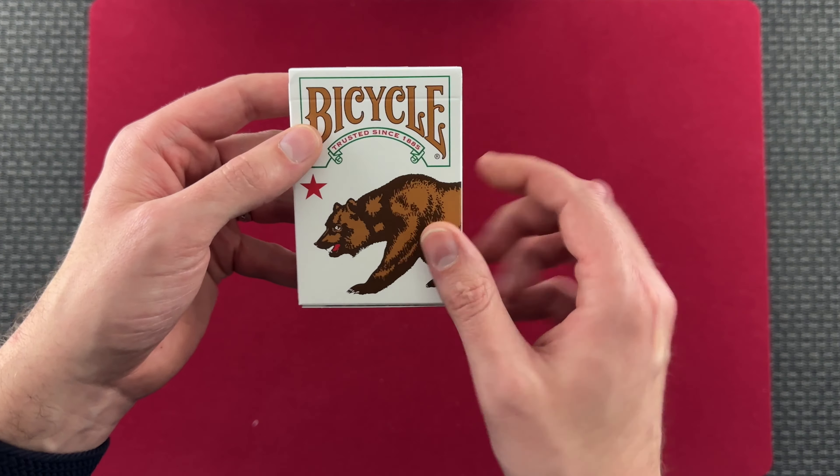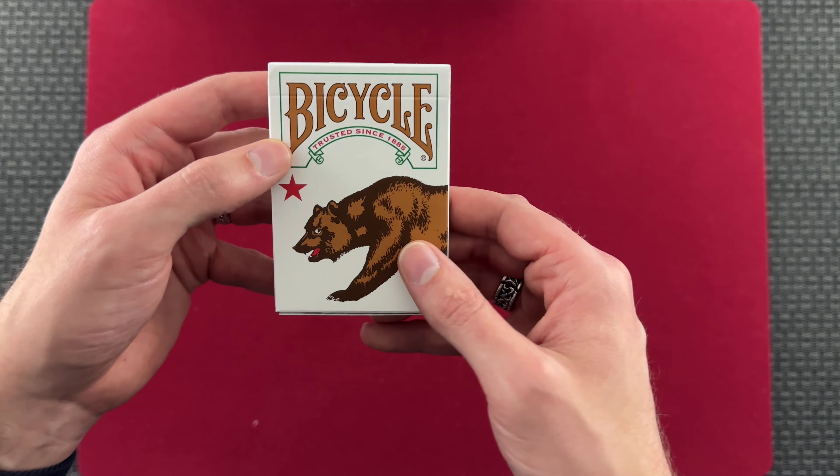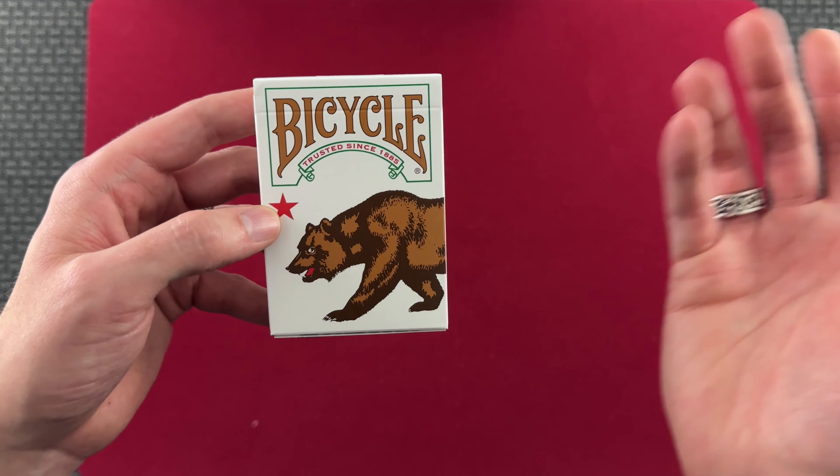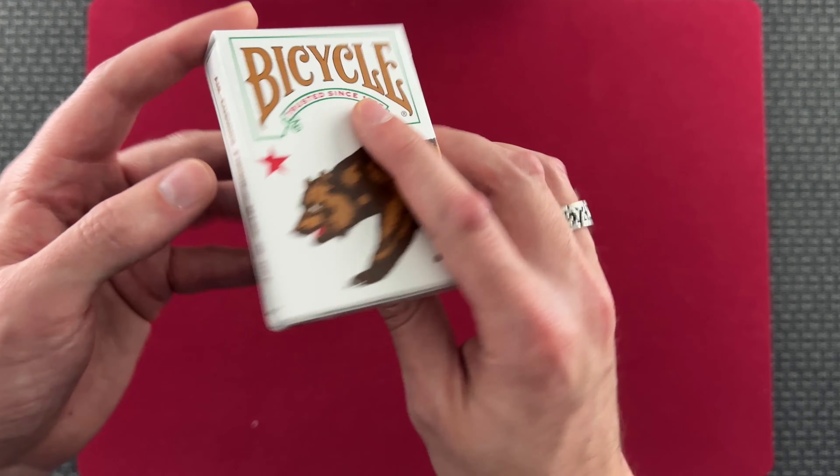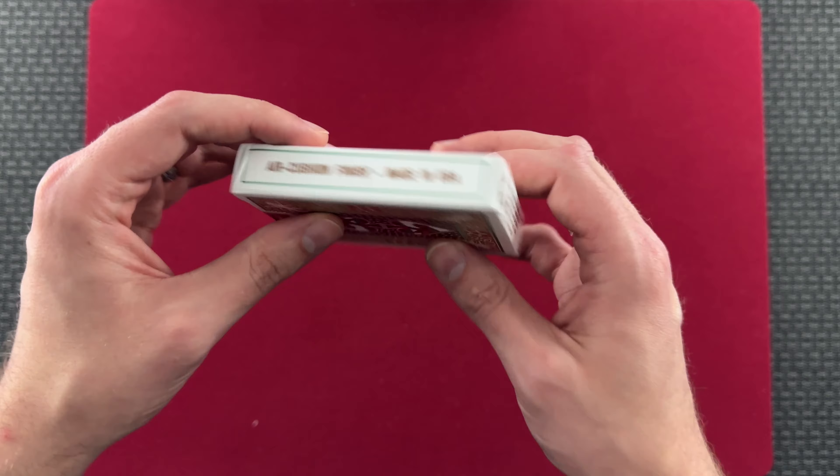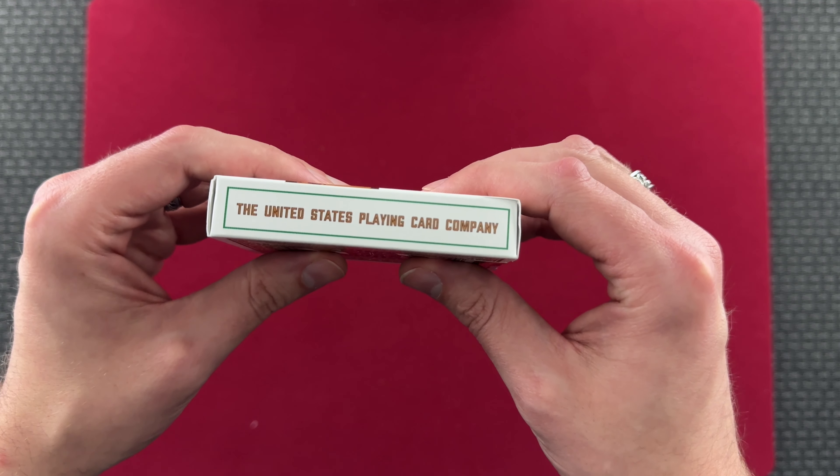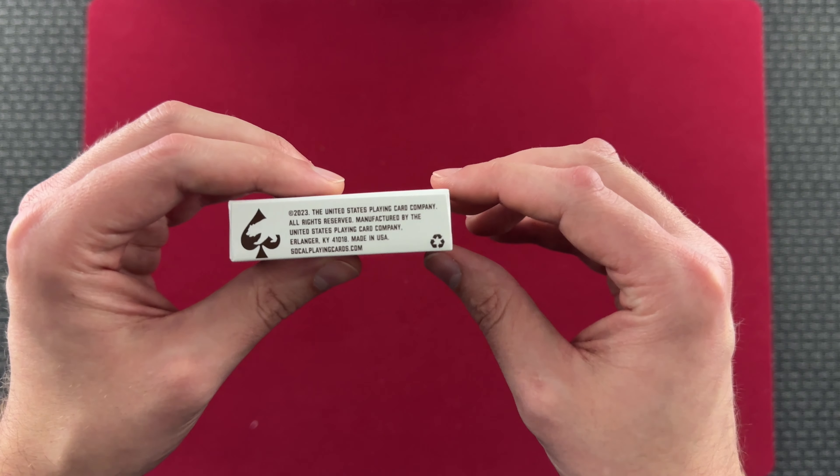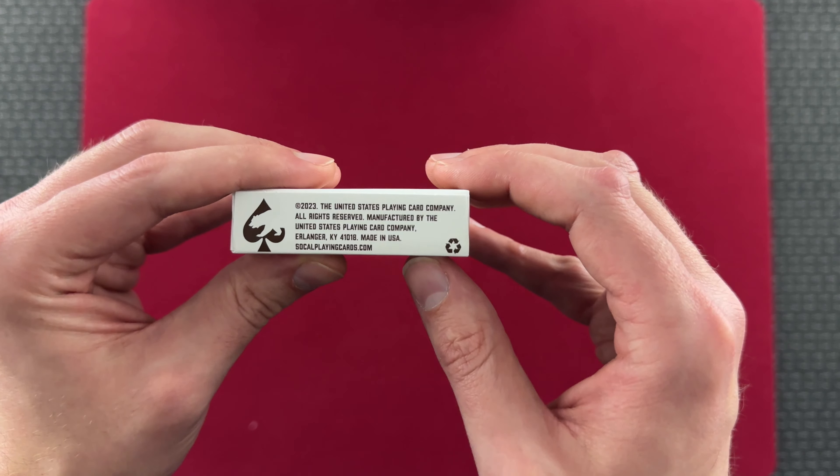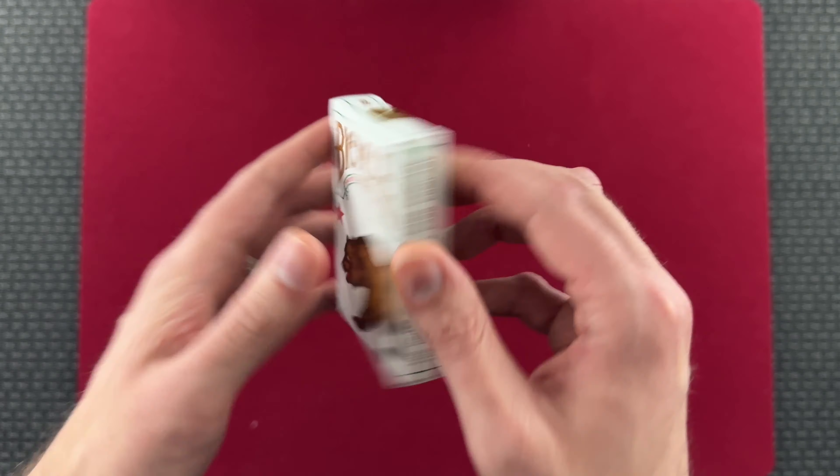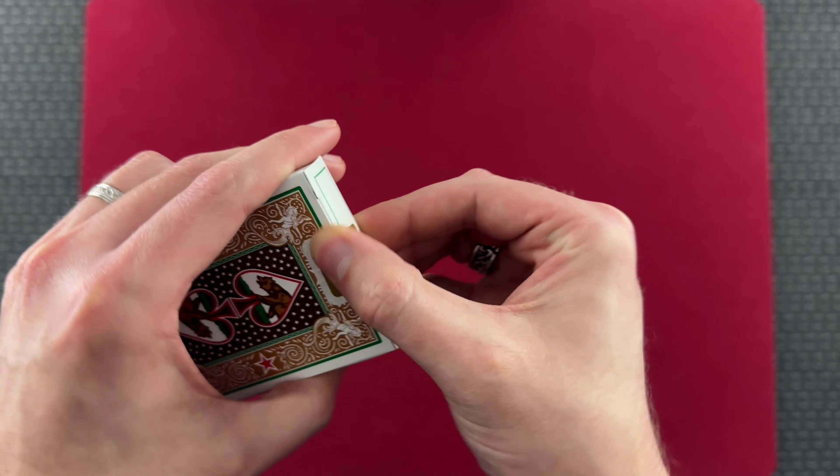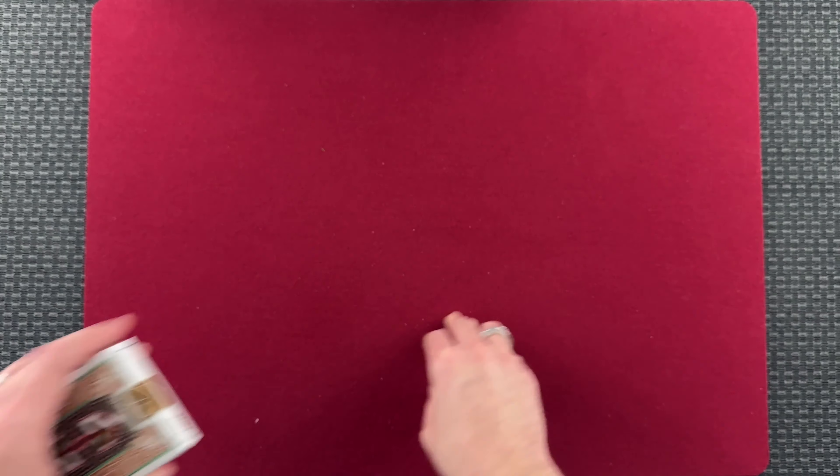So on the front, we have Bicycle Trusted since 1885. We have the lovely bear here. That's the SoCal Playing Cards logo. On the side, we see Air Cushion Finish made in the USA. On the other side, we see the United States Playing Card Company. On the bottom, we have all of the different ad copy here and SoCal Playing Cards. We have a standard seal going on, but we're going to crack that and get into these cards.